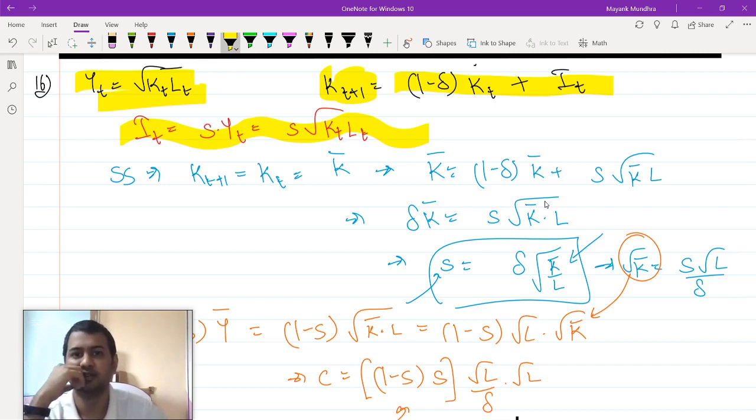I can just substitute this thing here in my It. What I get is in steady state Kt plus 1 should be equal to Kt which should be equal to K bar. I will substitute this Kt plus 1 and Kt to be equal to K bar. So I will get K bar equals to 1 minus delta K bar plus s K bar L.